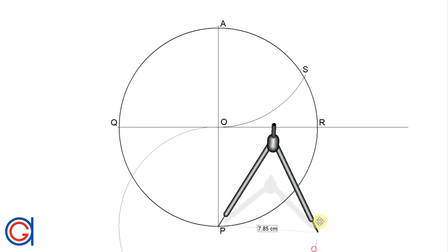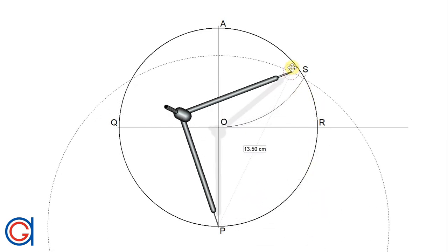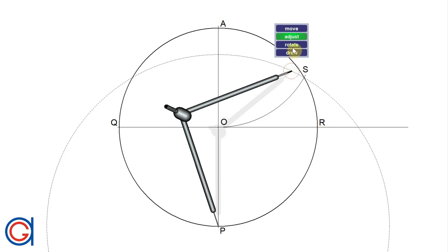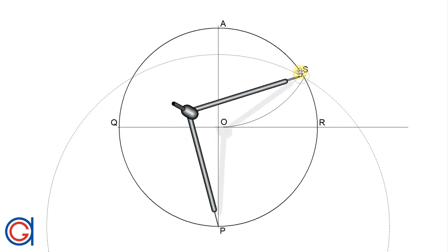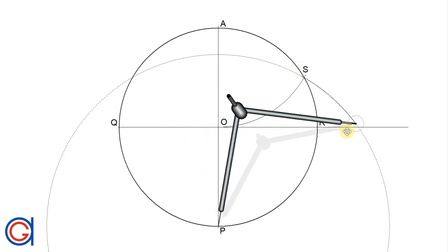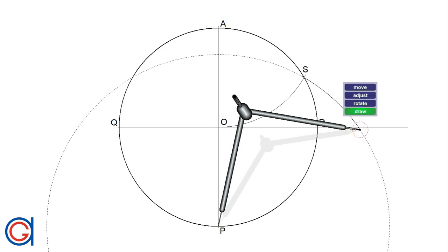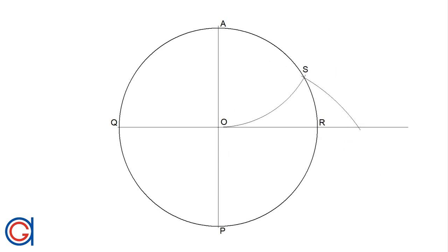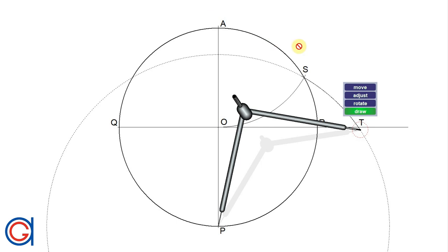So now setting our compass on point P and radius PS, we scribe an arc to the right until it cuts our elongated diameter at a new point which we will call point T as can be seen here.